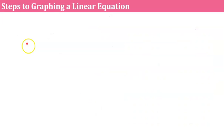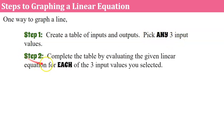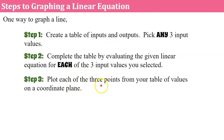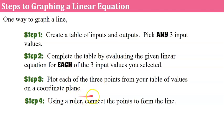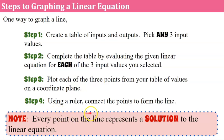Let's go over the steps to graphing a linear equation using a table — just one way to graph a line; in future videos you'll learn a different way. Step 1: create a table of inputs and outputs and pick any three input values. Step 2: complete the table by evaluating the given linear equation for each of the three input values. Step 3: plot each of the three points from your table on a coordinate plane. Step 4: using a ruler, connect the points to form a line. Note: every point on the line represents a solution to the linear equation.